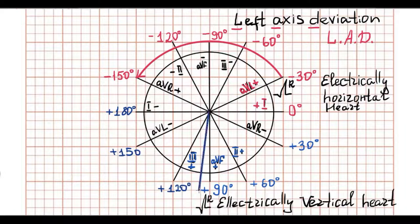An axis of plus 100 degrees or more positive is termed right axis deviation.